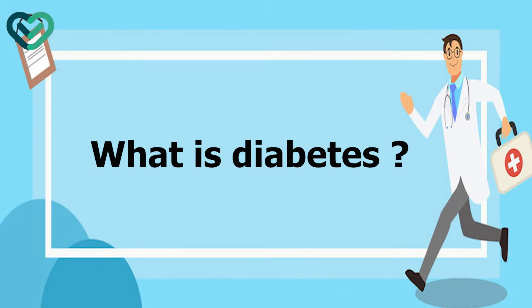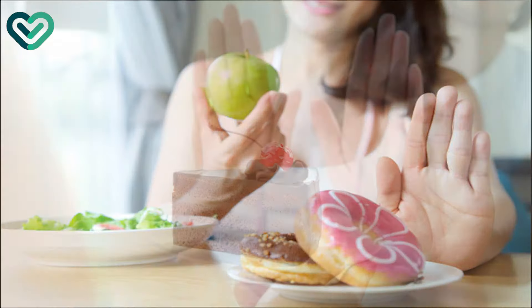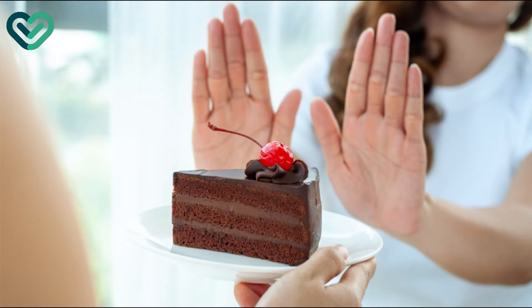Diabetes is a chronic health condition characterized by high blood sugar levels. This occurs when the body fails to produce enough insulin, or when the body fails to use insulin effectively.